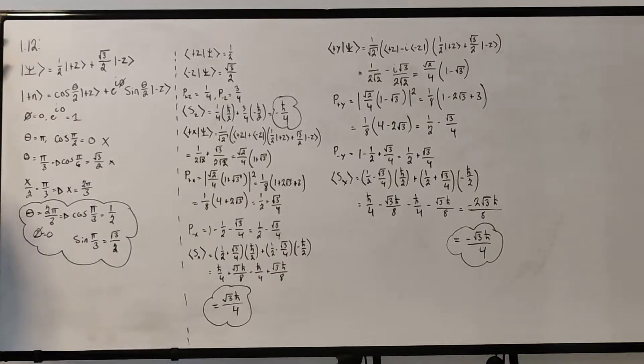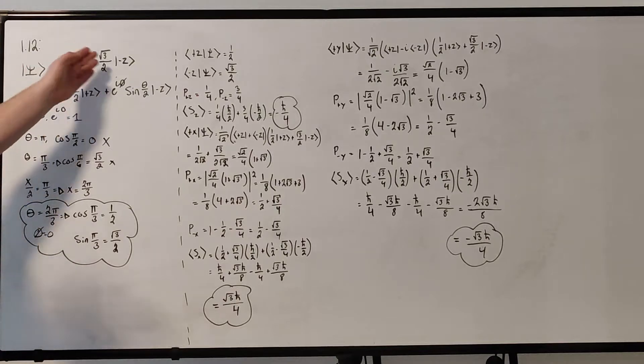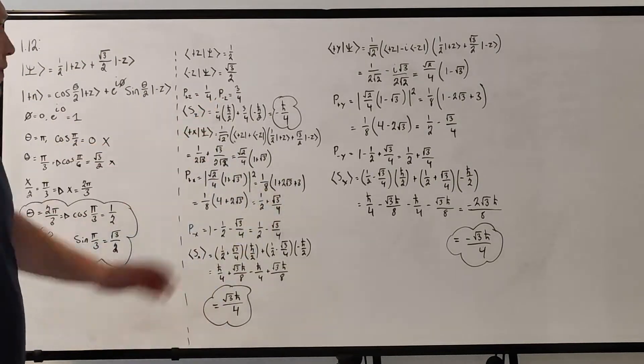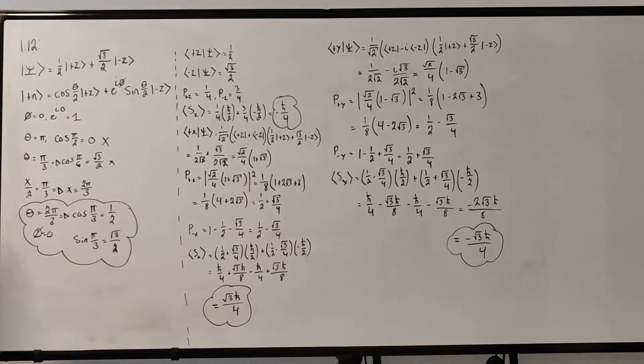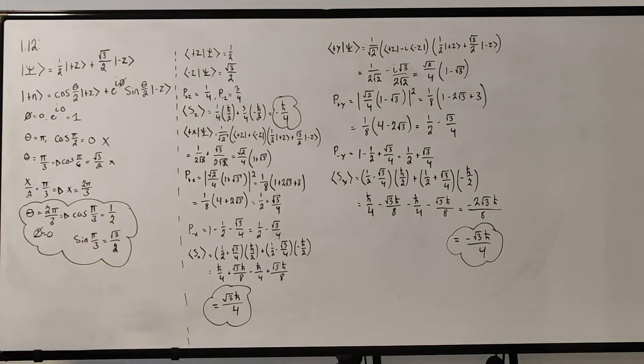We have a state psi which is pretty similar to the states we've worked with before, so it just doesn't have a complex number in it. It's just one-half times plus z plus root three over two times minus z. The second half of this problem is essentially what we've done before. The first one-fourth of this problem is figuring out,